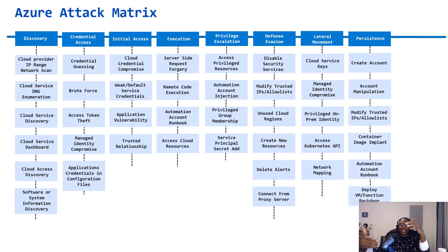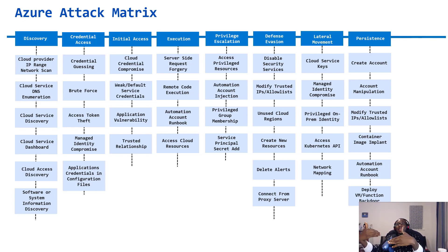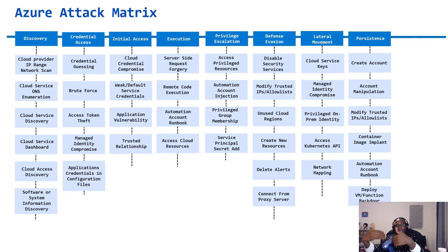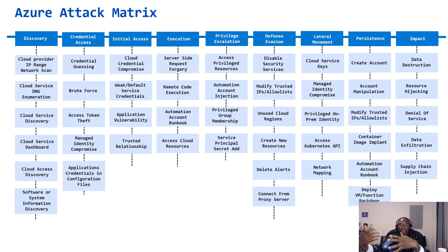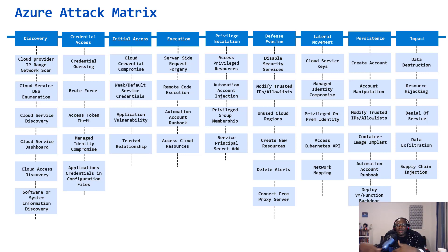Persistence is where an attacker tries to maintain access even after being detected and kicked out — essentially planting a backdoor. Impact is where the attacker looks to cause real damage: data destruction, data exfiltration, database dumping, denial of service, resource hijacking, or crypto mining.